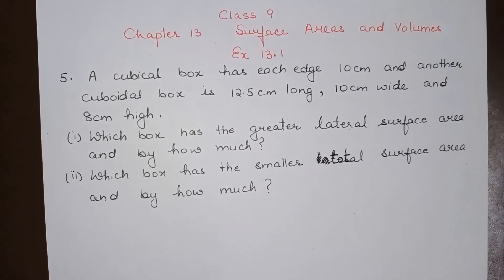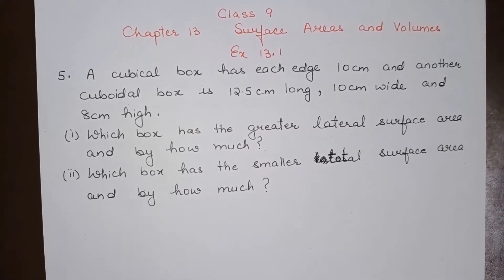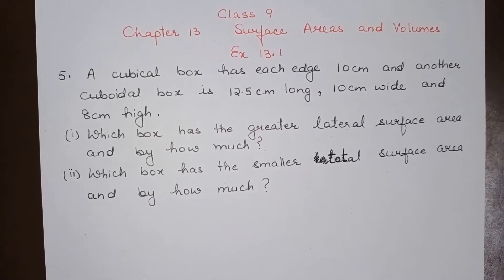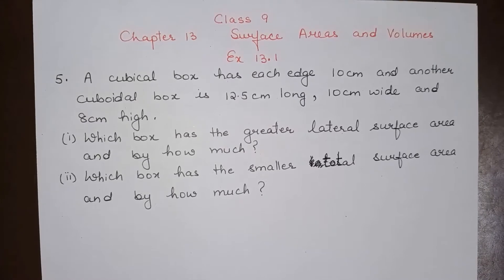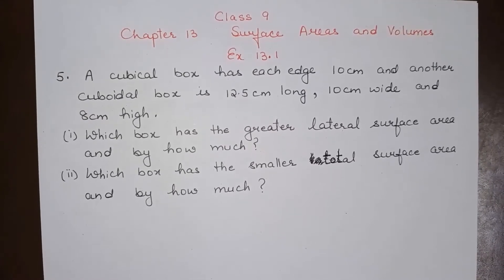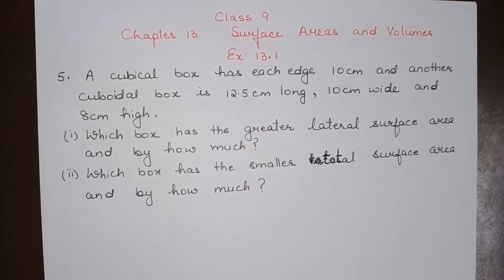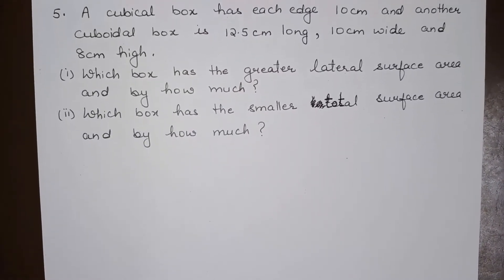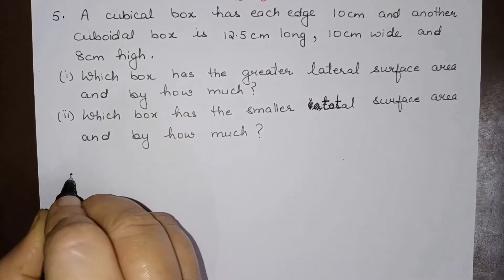Hello everyone, today we will do Class 9th Chapter 13th, Surface Areas and Volumes, Exercise 13.1 Question Number 5. A cubical box has each edge 10 centimeter, and another cuboidal box is 12.5 centimeter long, 10 centimeter wide, and 8 centimeter high. The first part asks: which box has greater lateral surface area and by how much? So let us start with the first part.